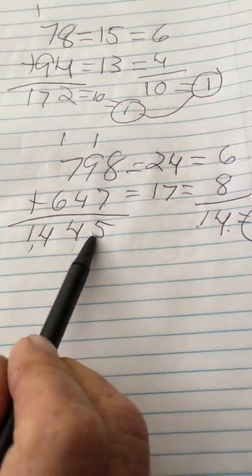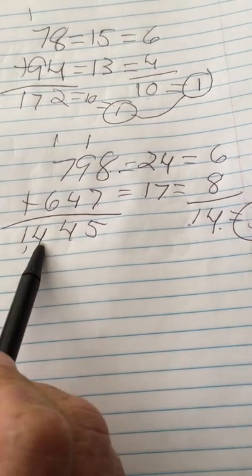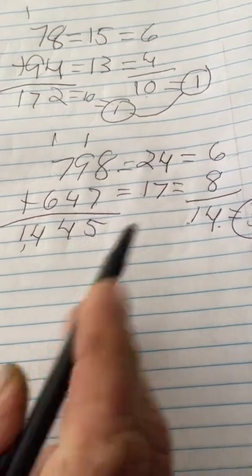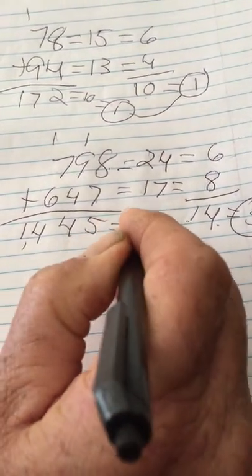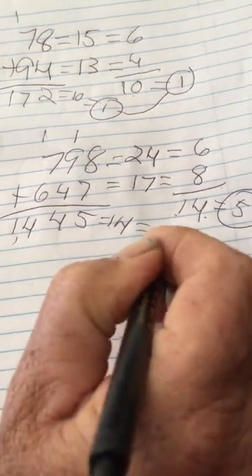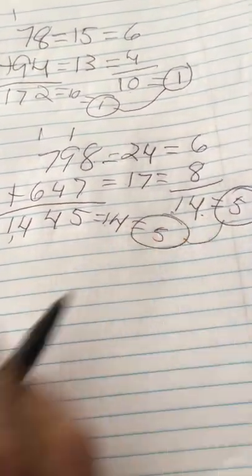1,445. 1 plus 4 is 5. 5 plus 4 is 9. And 9 plus 5 is 14. As you can see, it matches our other answer as well. And 1 plus 4 equals 5. These two answers match. You are correct.